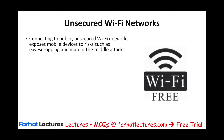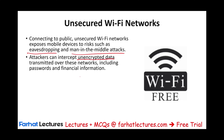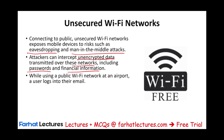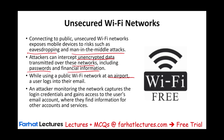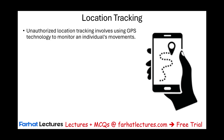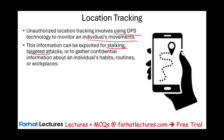Unsecured Wi-Fi networks pose another risk. Connecting to public unsecured Wi-Fi exposes mobile devices to risks such as eavesdropping and man-in-the-middle attacks. Attackers can intercept unencrypted data transmitted over these networks, including passwords and financial information. Be careful when using your mobile device in unsecure environments, like an airport. An attacker monitoring the network can capture login credentials and gain access to email accounts, finding information about other accounts and services. Additionally, unauthorized location tracking via GPS technology can be exploited for stalking, targeted attacks, or gathering confidential information about an individual's habits, routine, or workplace.